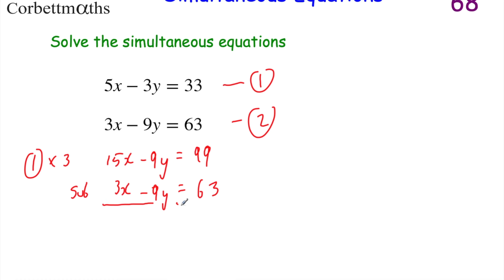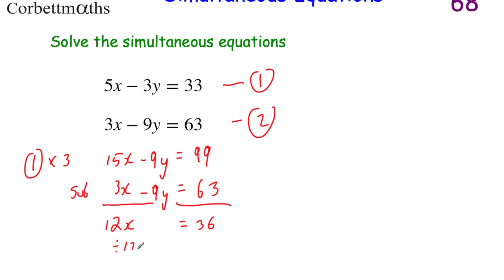So let's subtract those two equations from each other. 15x minus 3x is 12x. Minus 9y subtract minus 9y is 0, so they cancel out. And 99 minus 63 equals 36. So we've got 12x equals 36. Dividing both sides by 12 gives us x equals 36 divided by 12, which is 3.